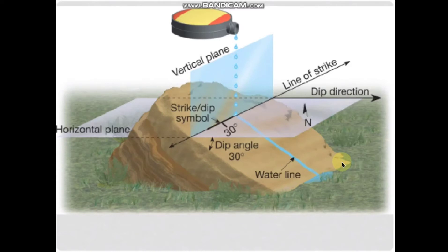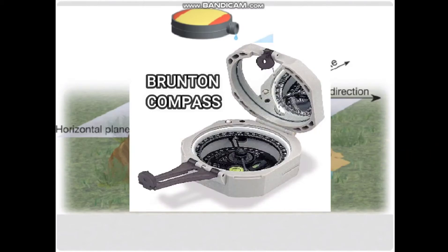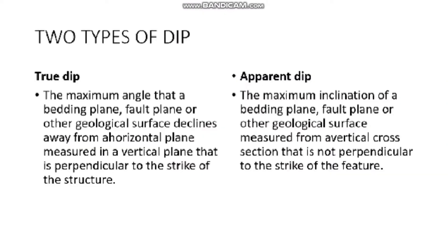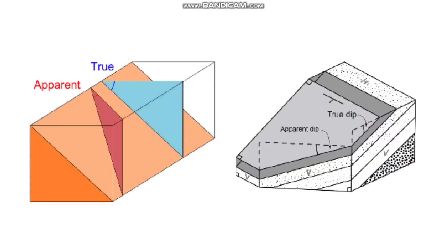We can measure strike and dip using a pretty easy tool called a Brunton compass. There are two types of dip. True dip is the maximum angle that a bedding plane, fault plane, or other geological surface declines away from a horizontal plane, measured in a vertical plane that is perpendicular to the strike of the structure. Apparent dip is the inclination of a bedding plane, fault plane, or other geological surface, measured from a vertical cross section that is not perpendicular to the strike line. True dip can be calculated from apparent dip using trigonometry if you know the strike. Geologic cross sections use apparent dip when they are drawn at some angle not perpendicular to strike.